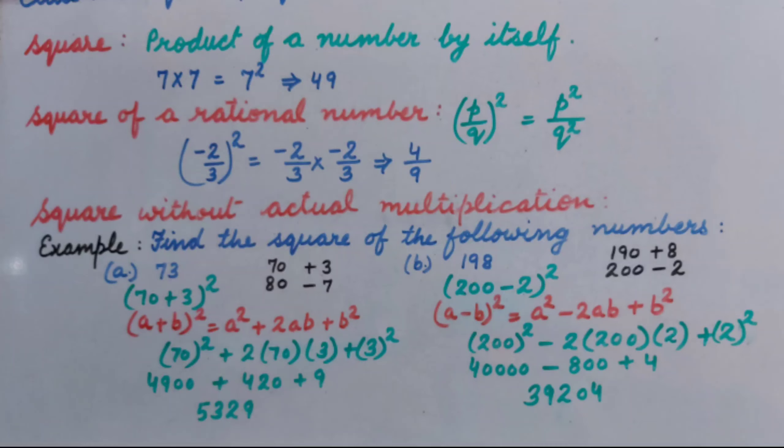So, square of minus 2 upon 3 is 4 upon 9. How to find the square without actual multiplication?